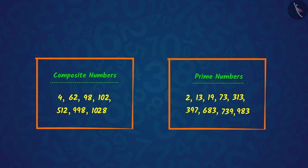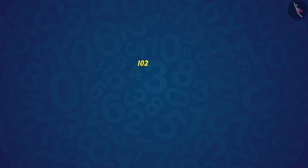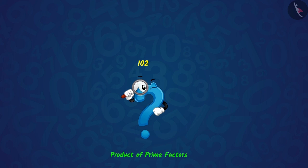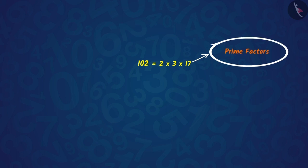Now, if we choose any one of these numbers, suppose 102 and proceed. Then, can you write 102 as the product of its prime factors? 102 can be written as the product of its prime factors, i.e., 2, 3 and 17.